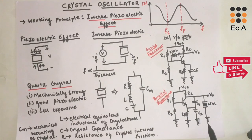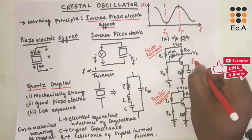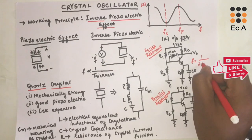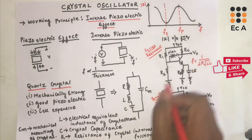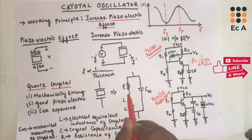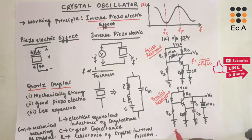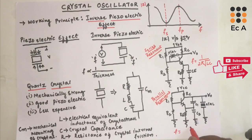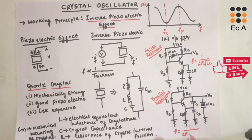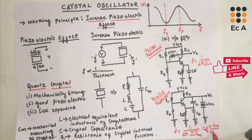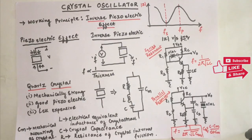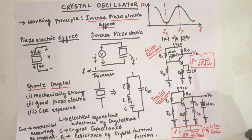The frequency of oscillation of the series resonant circuit is f = 1 / (2π√(LC)), depending on the L and C values in the equivalent circuit. The frequency of oscillation of the parallel resonant circuit is f = 1 / (2π√(L·Ceq)), where Ceq = (C × Cm) / (C + Cm) because C and Cm are connected in parallel. These are the resonating frequencies of the series and parallel resonant circuits. This is all about crystal oscillators.